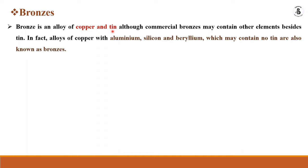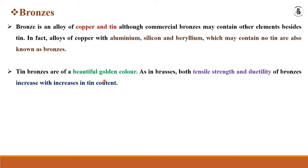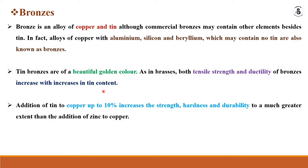Now we will be discussing bronze. Bronze is nothing but a copper-tin alloy. Basically these alloys with aluminium, silicon and beryllium, which may also contain no tin, are also known as alloys. Bronze has a beautiful golden colour. As in brass, both tensile strength and ductility of bronze increase with increasing tin content.